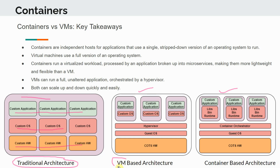Then we looked at the VM-based architecture, or virtual machines, where we have COTS hardware — commercial off the shelf — with a guest OS and a hypervisor, which is the control management layer. The VMs can run their own independent custom OS, which can be different from the guest OS, and applications can talk to each other directly. That's the VM-based way of doing things.